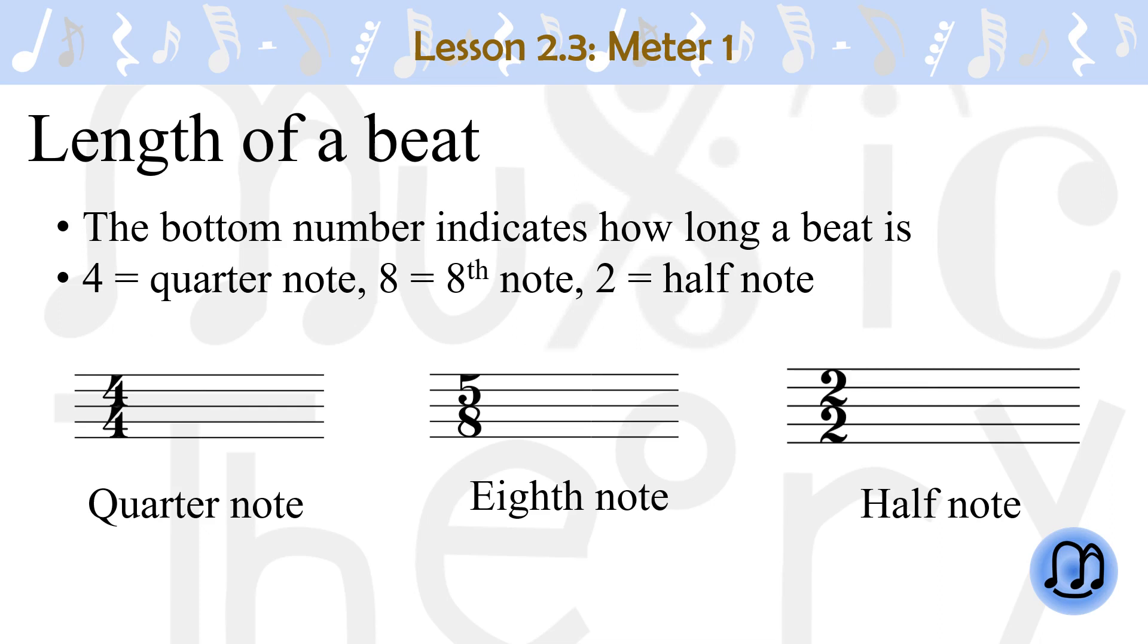The bottom number indicates how long a beat is. A 4 means the beat is a quarter note, an 8 means the beat is an eighth note, and a 2 means that the beat is a half note. For example, the beat in 4-4 is a quarter note, the beat in 5-8 is an eighth note, and the beat in 2-2 is a half note.